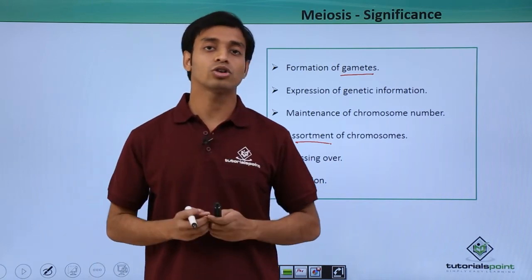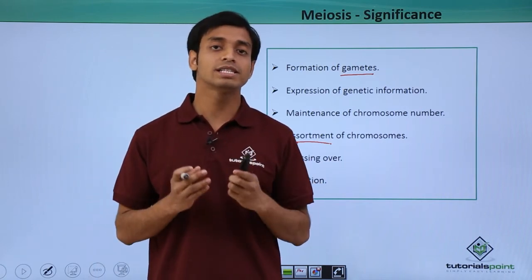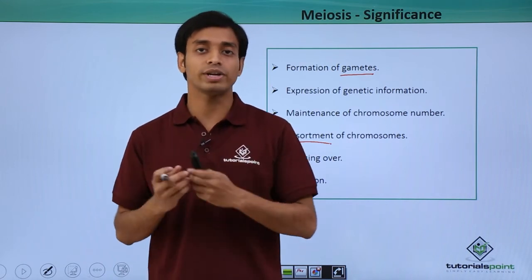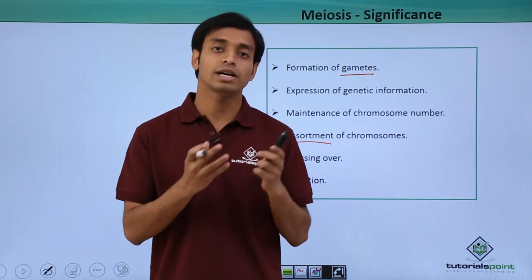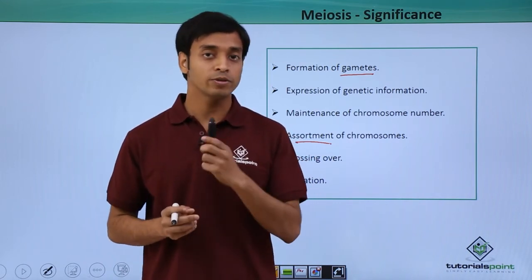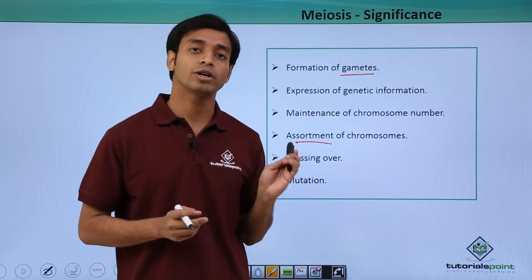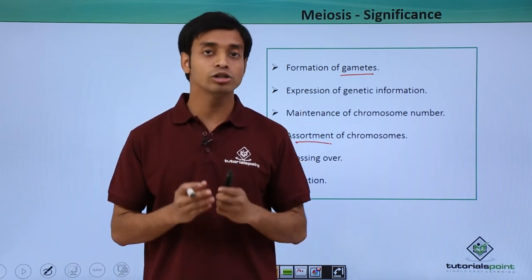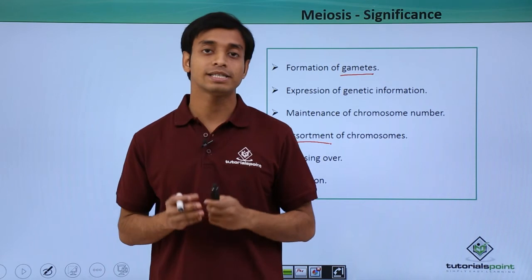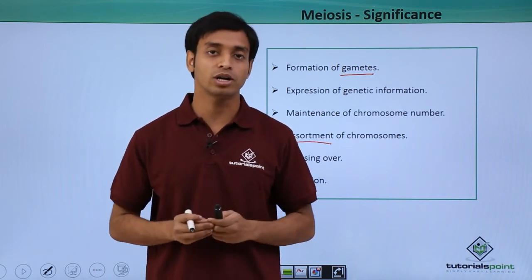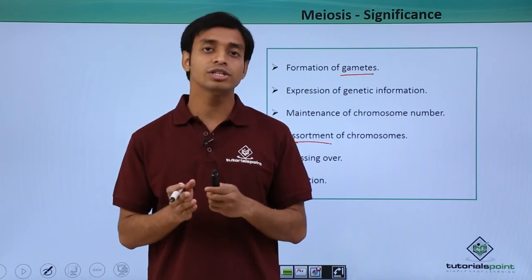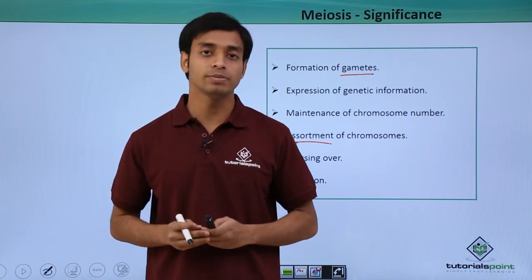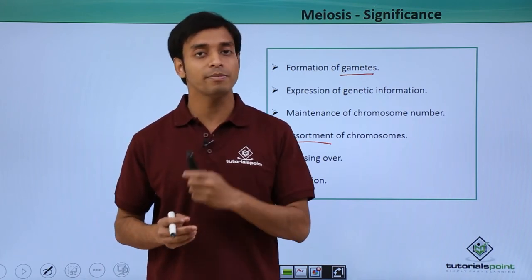During the process of meiosis, in the pachytene stage, crossing over takes place. Due to this crossing over, there is the possibility of getting variable new traits in a particular organism. This is possible only because of meiosis. Also, because of meiosis, some mutations may occur.